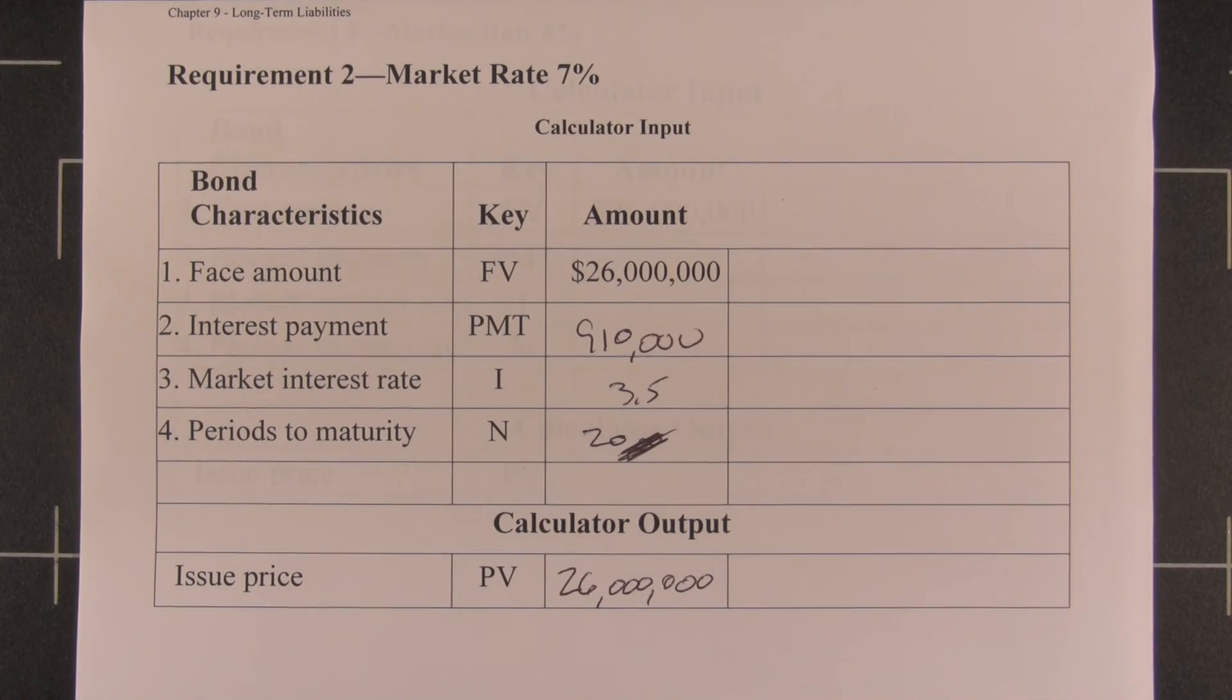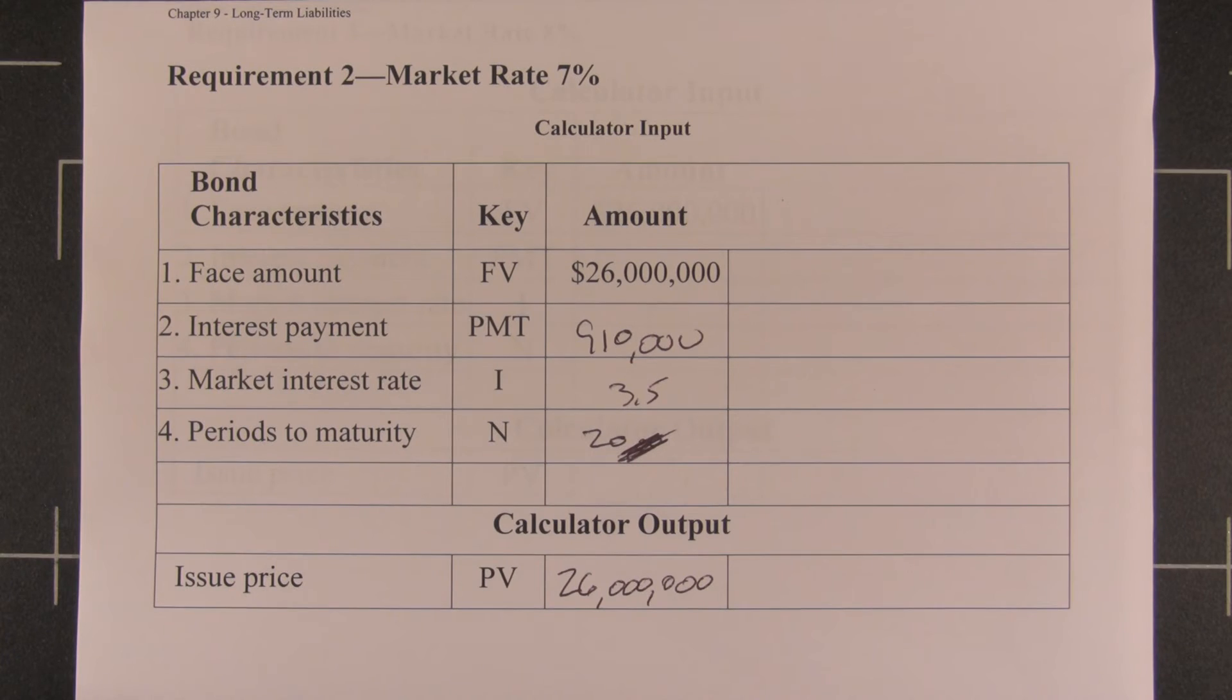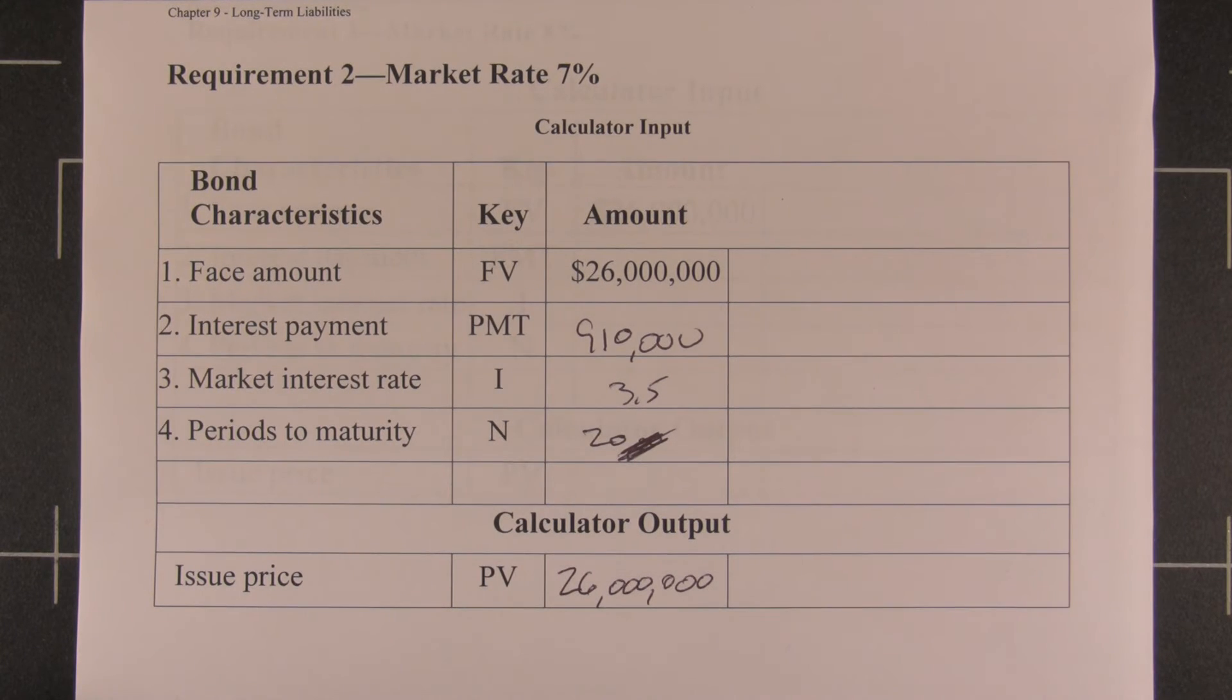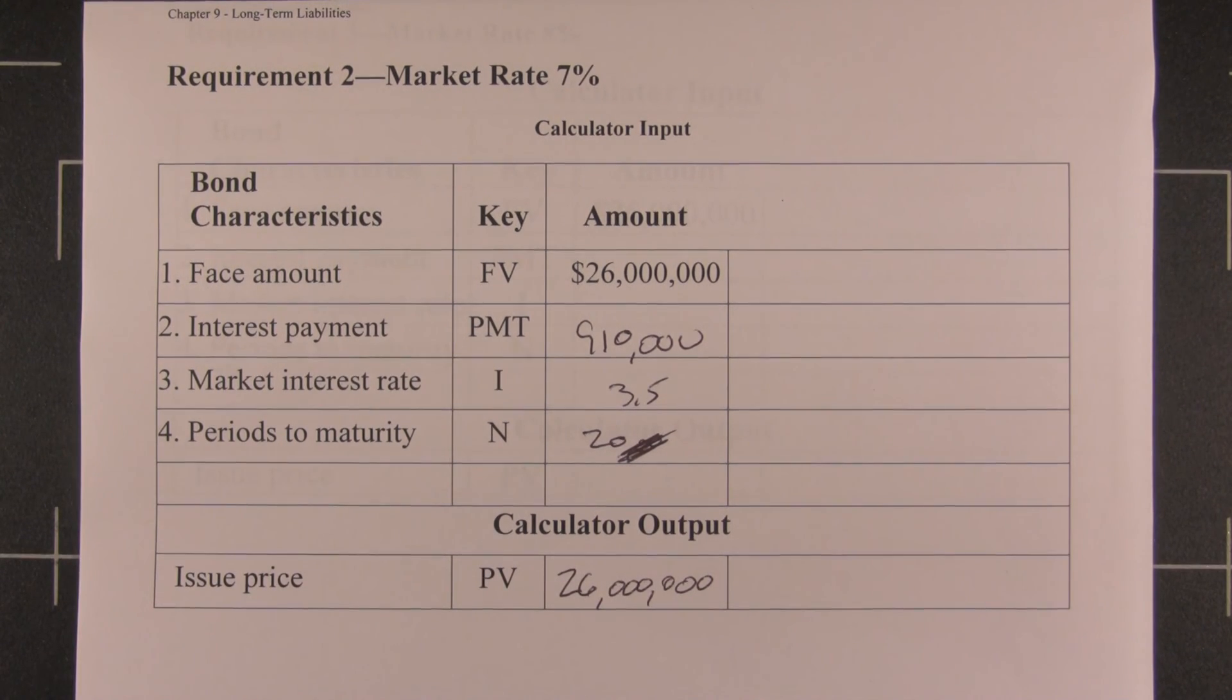That's also called bonds selling at par. Or sometimes you'll see the bonds being described as selling at 100. In other words, they sold at 100% of face value. The bond rate and the market rate were identical. Therefore, the bonds sell at the same price.